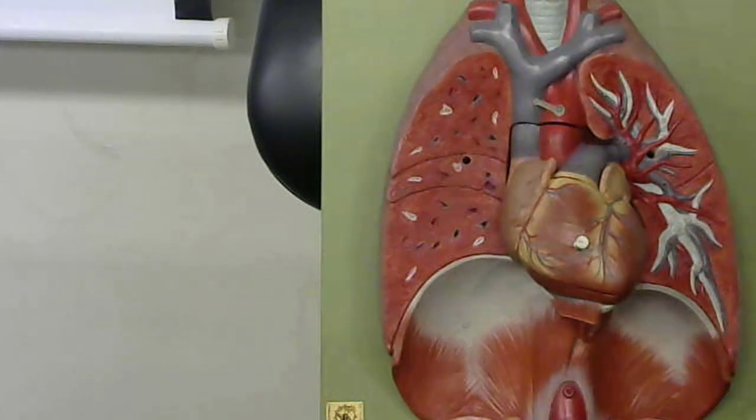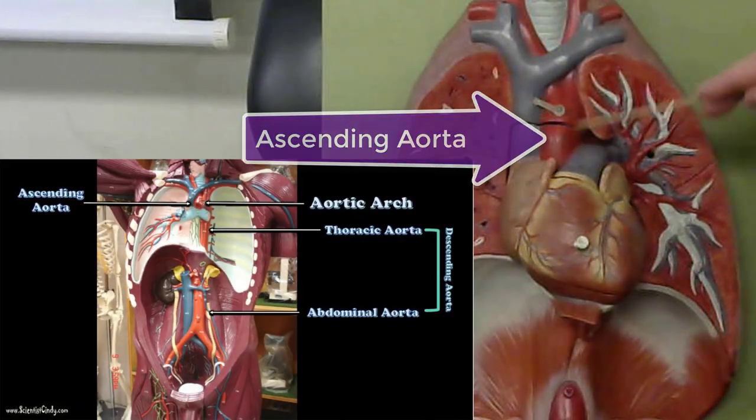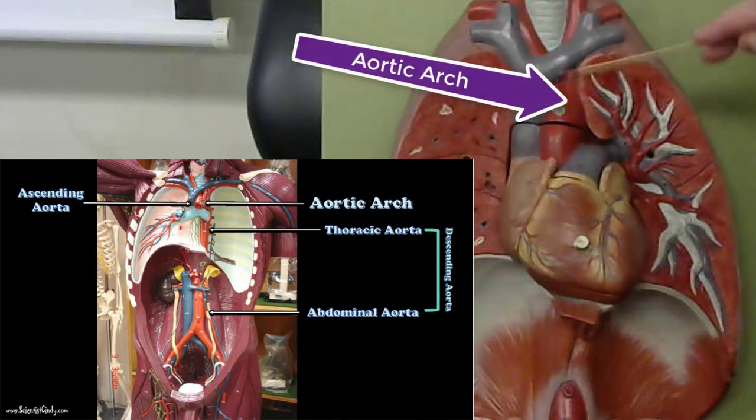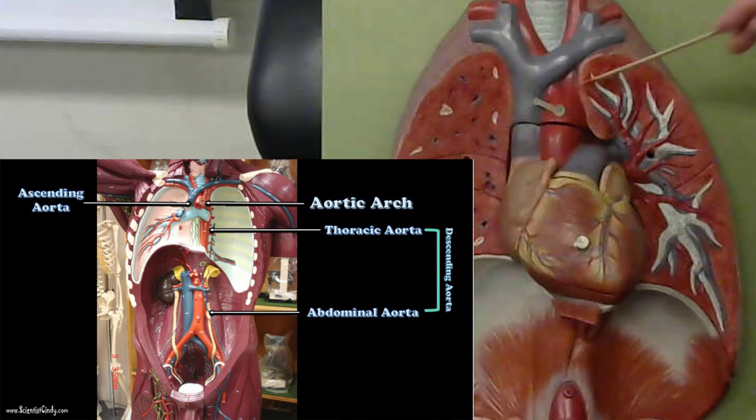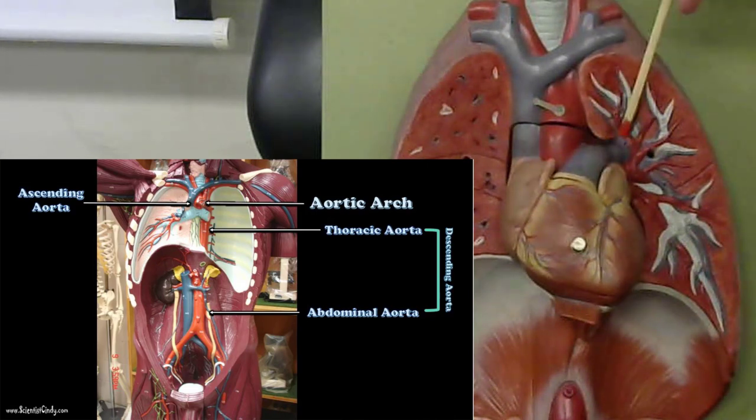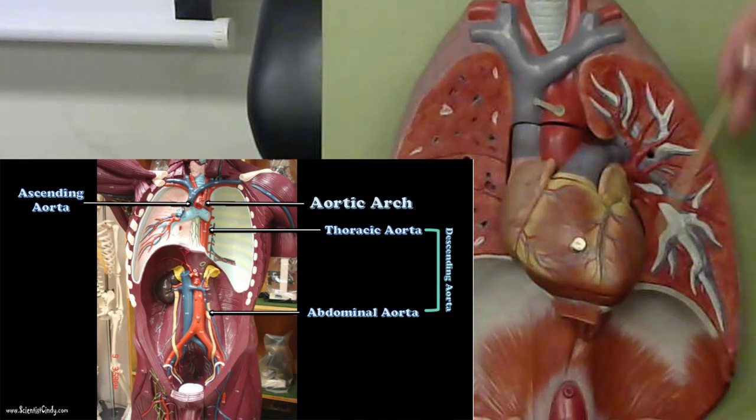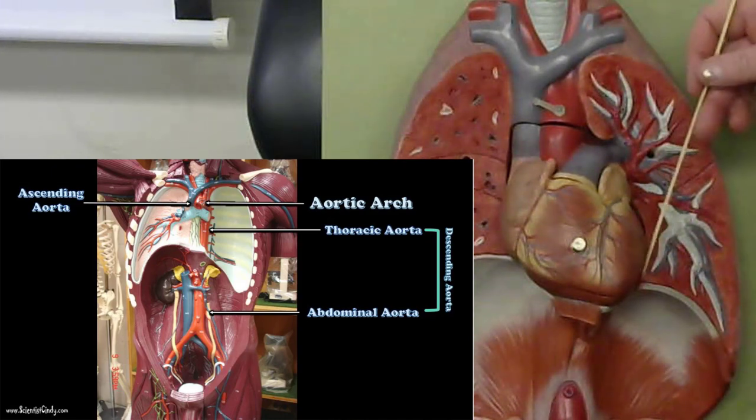Here and now we can see the ascending aorta and a little bit more of this aortic arch. Now remember, the aortic arch is going to continue and it will go down to form the descending aorta. The portion of the descending aorta that is in the thoracic cavity is the thoracic aorta.